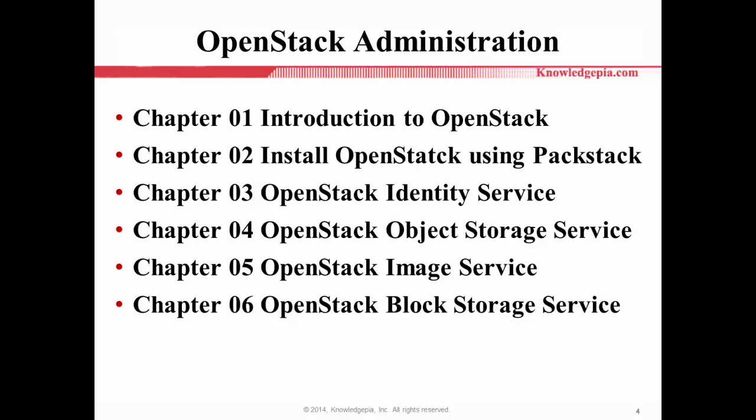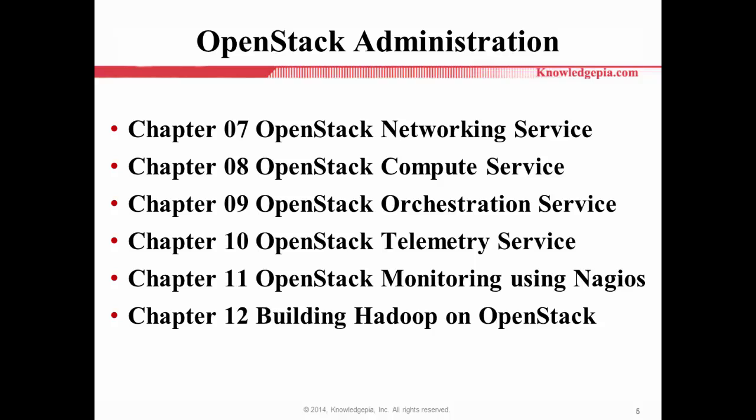Chapter four will be the object storage service. Chapter five will be the OpenStack image service. Chapter six will be the OpenStack block storage service. Chapter seven will be the OpenStack networking service. Chapter eight will be the OpenStack compute service by Nova. And chapter nine will be the OpenStack orchestration service.